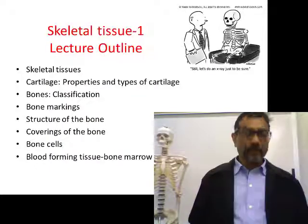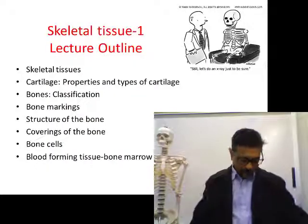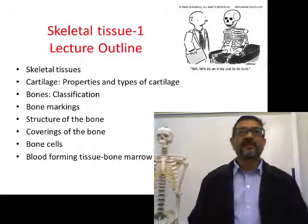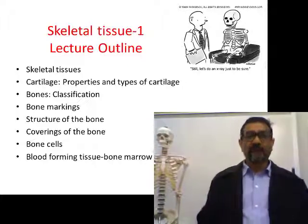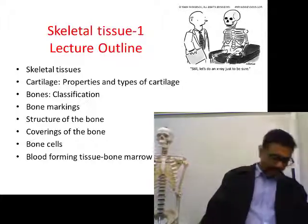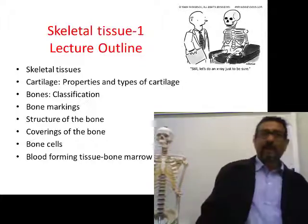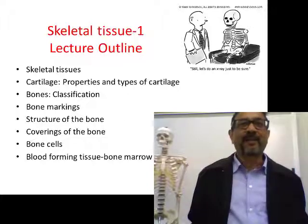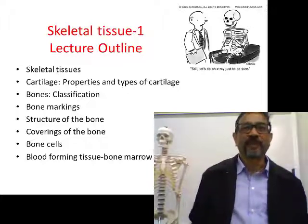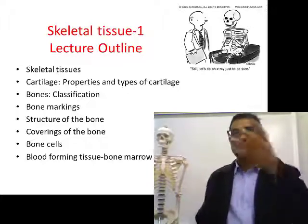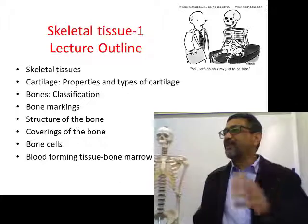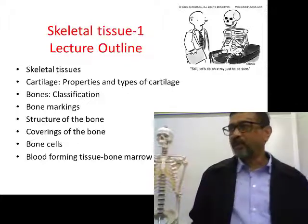Today we will talk about skeletal tissue. There are four types of tissues: connective tissue, epithelial tissue, muscle tissue, and neural tissue. So what is skeletal tissue?